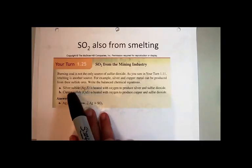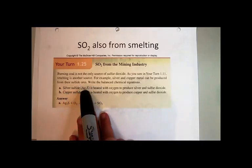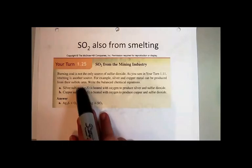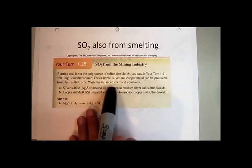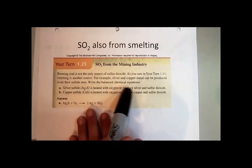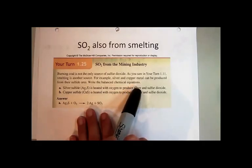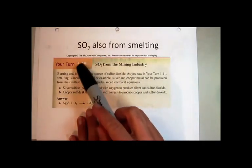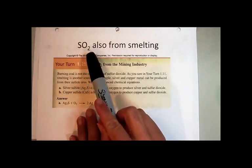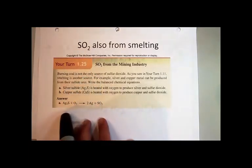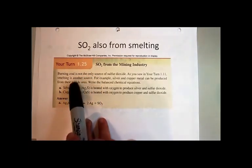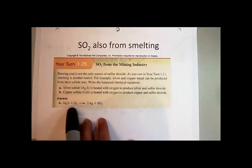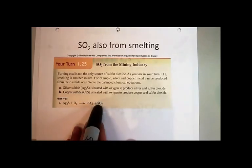The way we produce pure silver is: silver sulfide is heated with oxygen to produce silver and sulfur dioxide. So that's another source of sulfur dioxide. And in this question they're asking you, given these words, can you write down this balanced chemical equation?